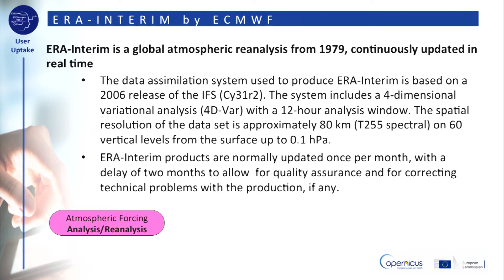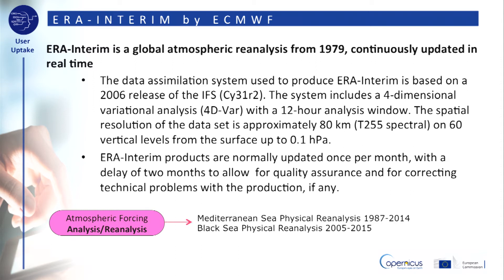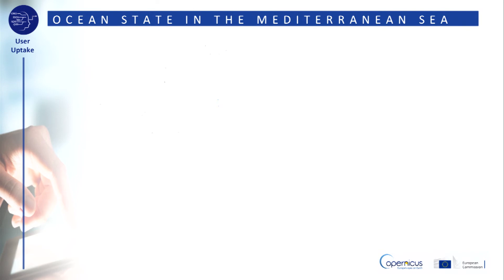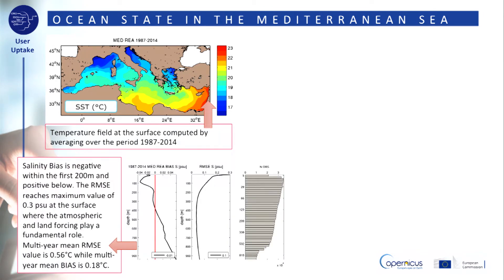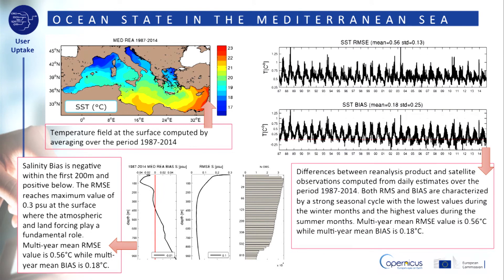ERA Interim is the source data used for producing the Mediterranean and Black Sea reanalysis datasets. For the Mediterranean Sea, the reanalysis product provides climate information of the sea surface temperature field computed by averaging over the 1987–2014 period, or statistics of temperature computed using observed data from satellite, which provide a description of the seasonal cycle over the basin, or statistics over the water column in terms of profiles computed using observed data from ARGO floats, providing a description of the vertical variability of temperature and salinity.